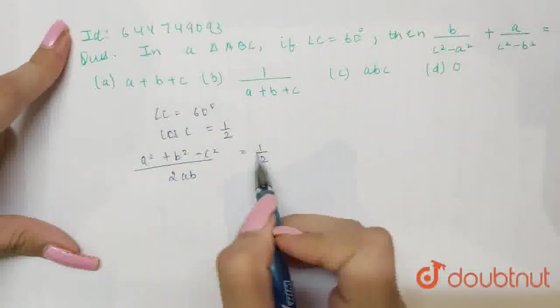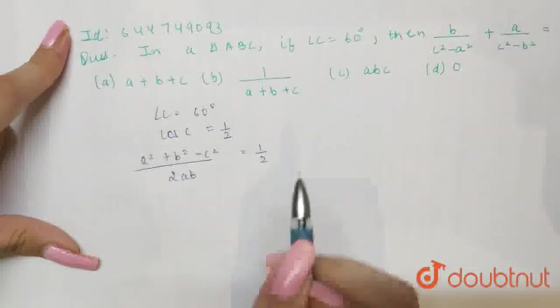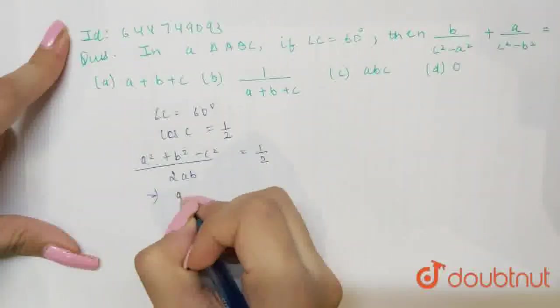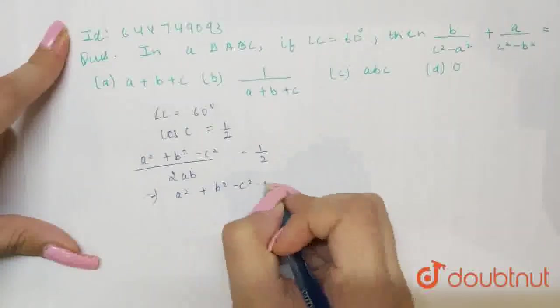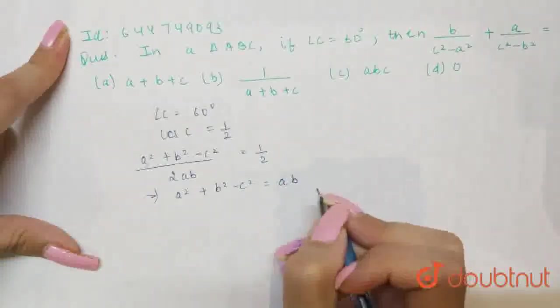That means if I say, so 2 and 2 will cancel out. So, from here a square plus b square minus c square is equals to ab, right?